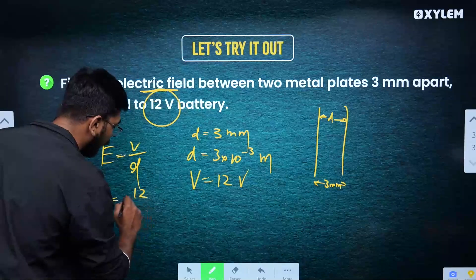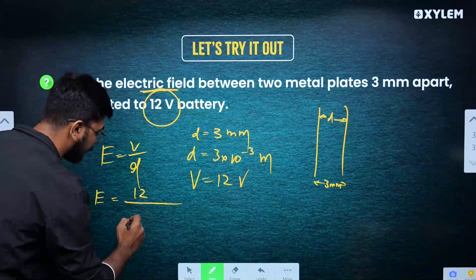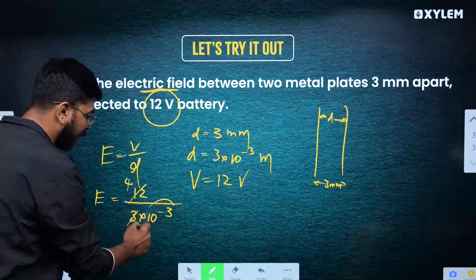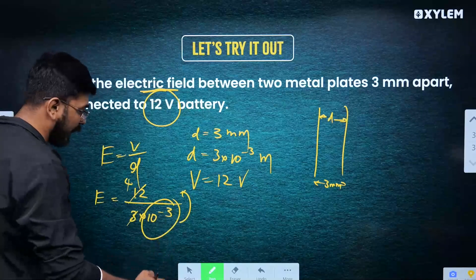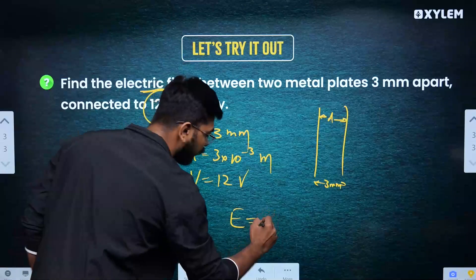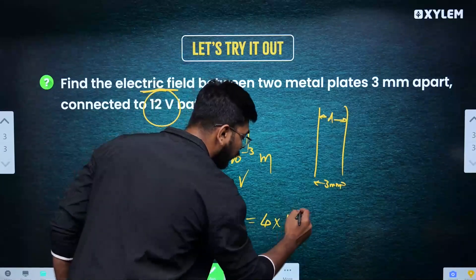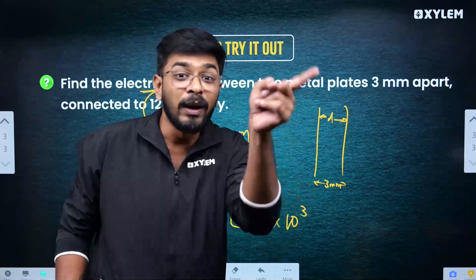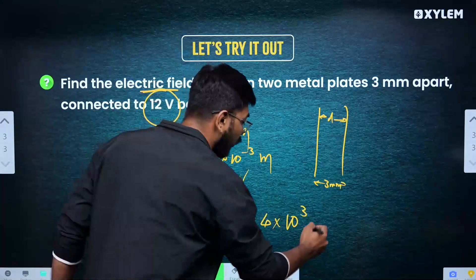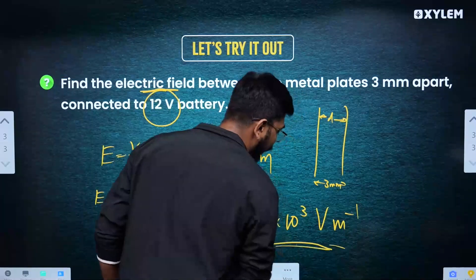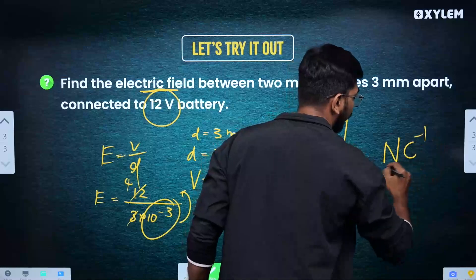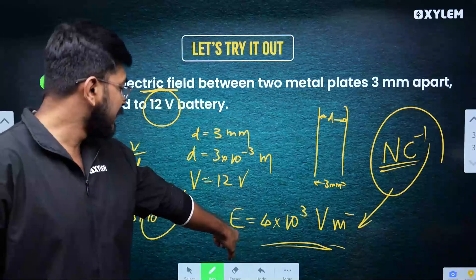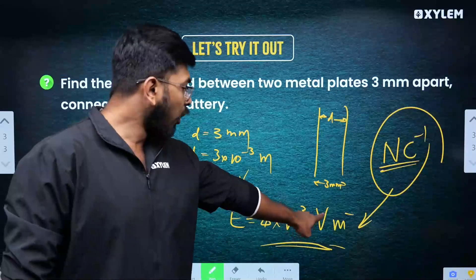First, convert: D = 3 mm = 3 × 10⁻³ m. The formula for electric field is E = V / D. Substituting: E = 12 / (3 × 10⁻³). Simplifying: 12 divided by 3 gives 4, so E = 4 × 10³. The unit of electric field is volt per meter (V/m) or newton per coulomb (N/C or N C⁻¹).